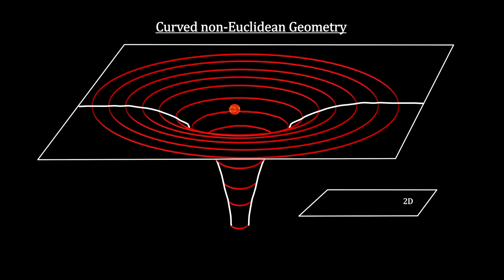But diagrams like this are misleading in two ways. First, they represent an external curvature into another dimension, when in fact we are talking about intrinsic curvature. There is no evidence for the existence of a fourth spatial dimension.